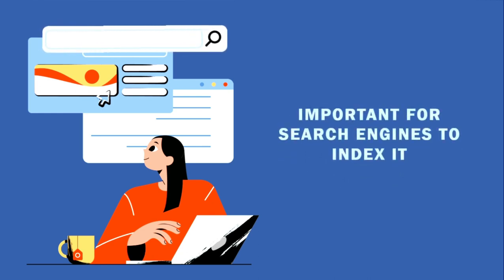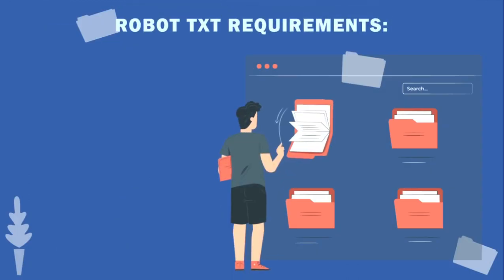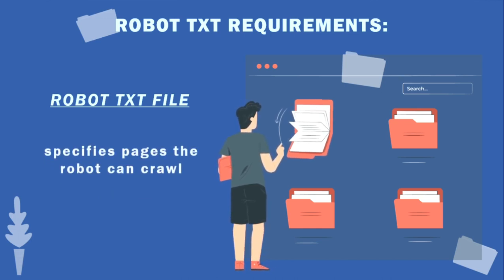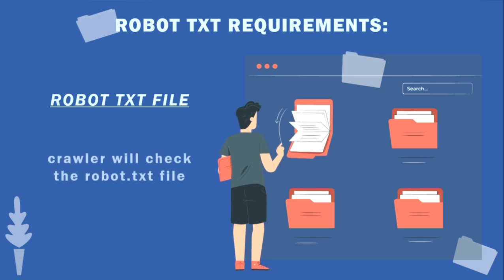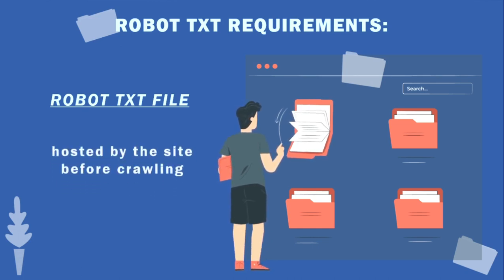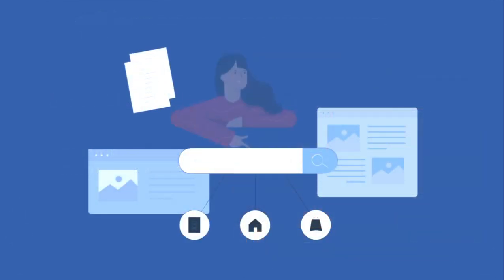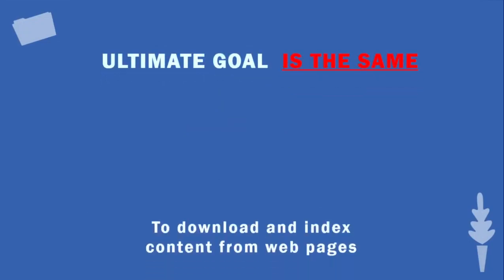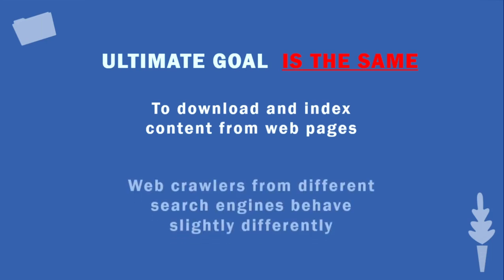Web crawlers also follow the robots.txt file to determine which pages to crawl. The robots.txt file specifies which pages the robot can crawl and which links it can track. The crawler will check the robots.txt file hosted by the site before crawling the page. All these factors have different weights in each search engine's proprietary algorithm built into its spider robot.